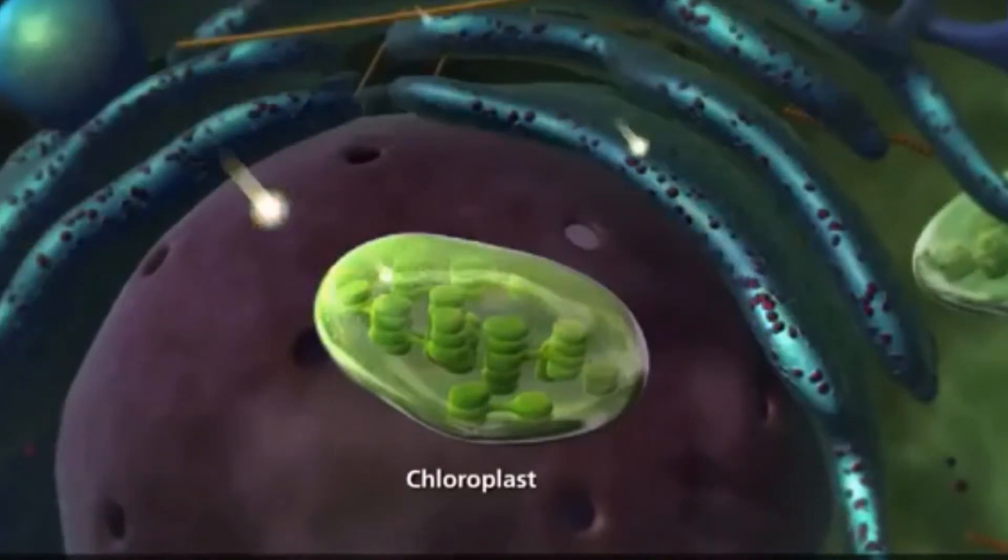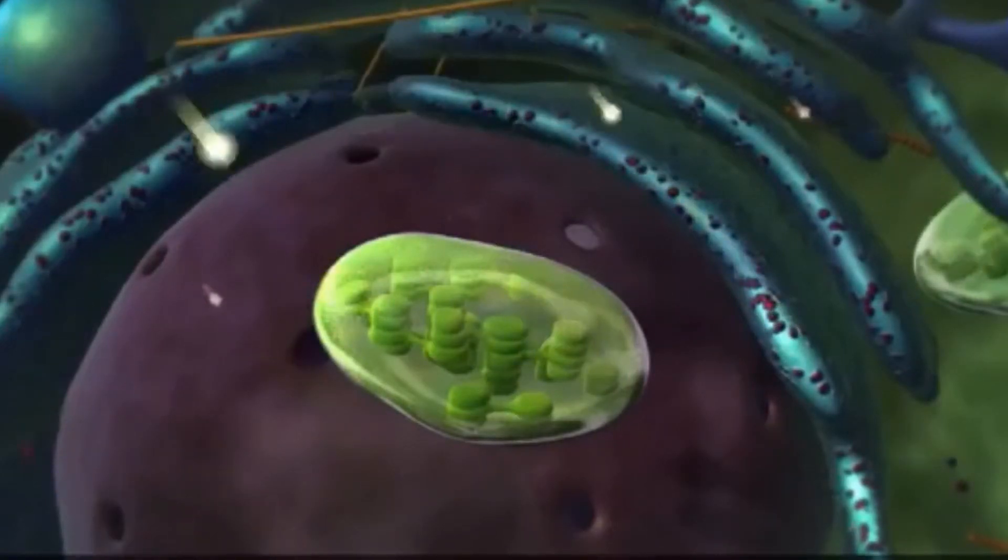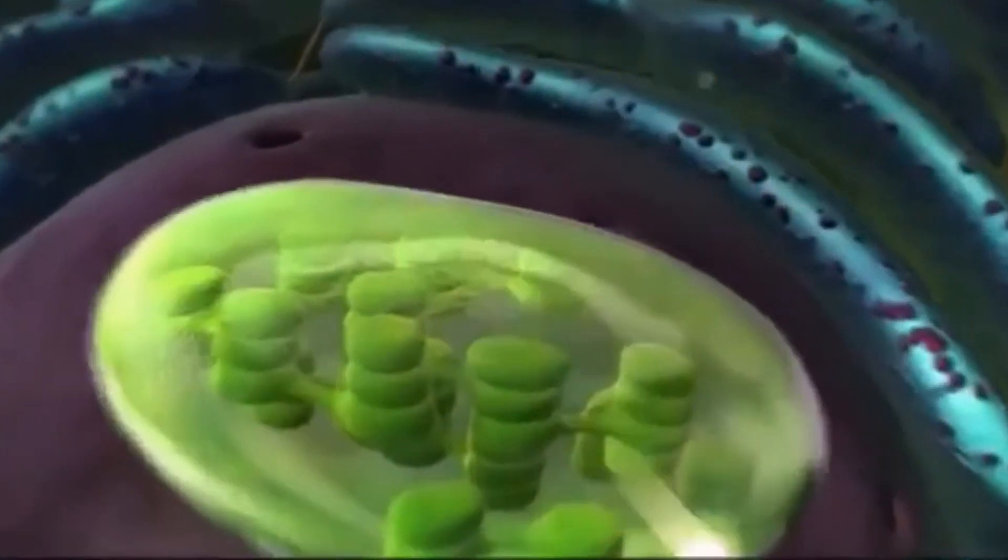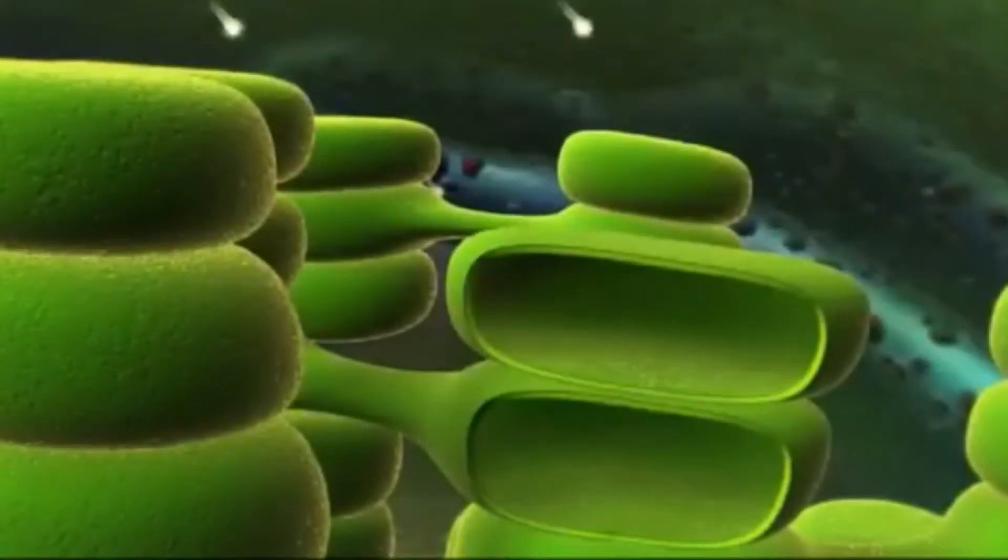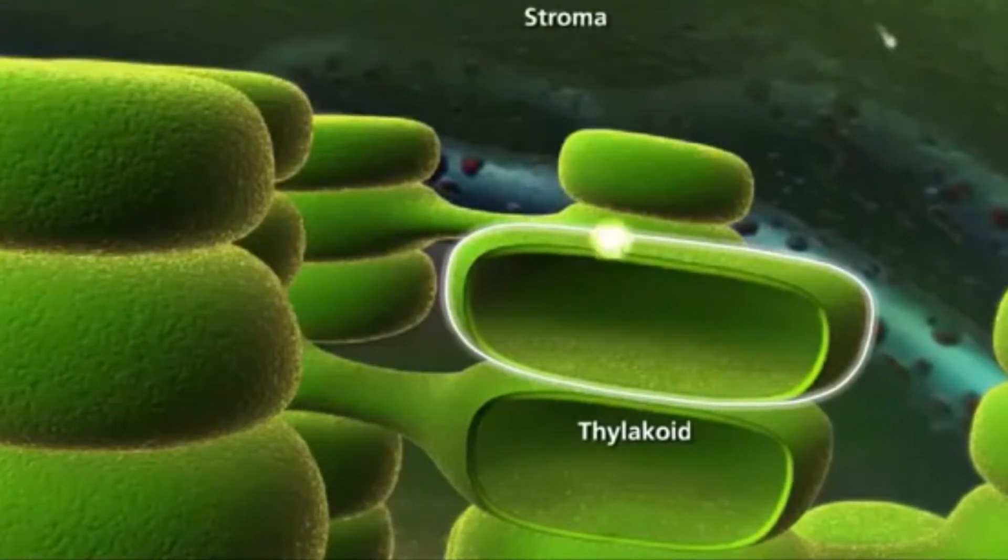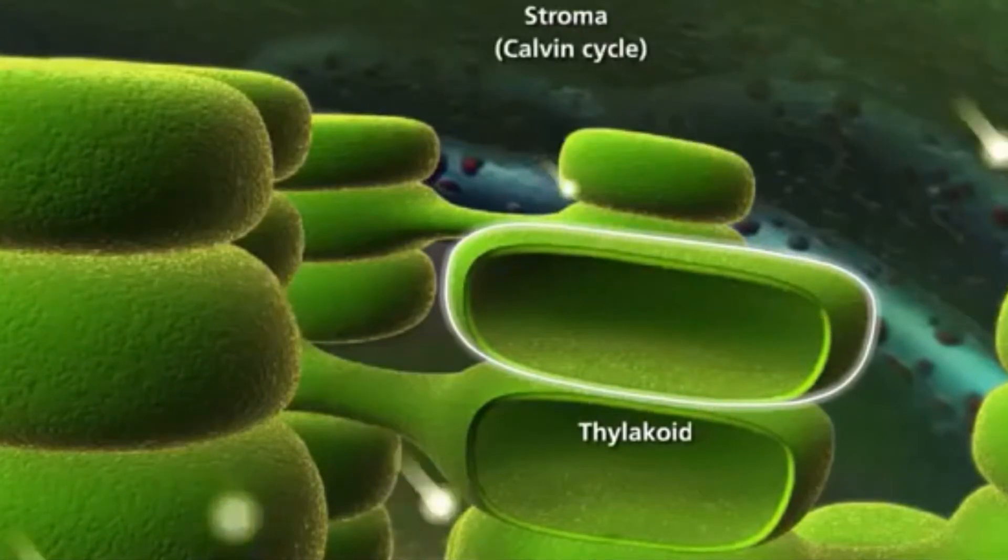Photosynthesis consists of two sets of reactions: the light-dependent reactions and the Calvin cycle. Within the chloroplasts are small disc-like structures called thylakoids, which are surrounded by a fluid-filled space called the stroma. The reactions that synthesize glucose, the Calvin cycle, occur in the stroma.